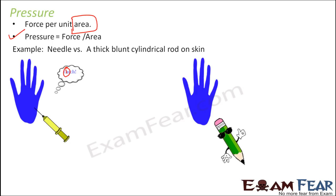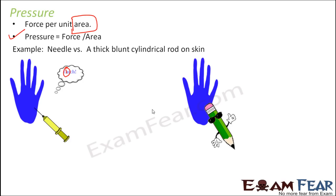If I try to pinch your skin with that thick blunt rod, you do not get that much hurt. In the first case you might start to bleed and feel pain, but in the second case nothing like that — and the amount of force applied in both cases is the same. So the applied force is the same. What has changed? Only the area has changed. The cross-sectional area of the needle is very small compared to the cross-sectional area of the blunt cylindrical rod. So in the needle's case the area is less; in the rod's case the area is more. Force is the same F in both cases.